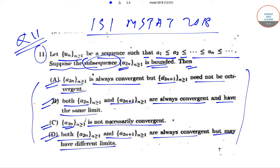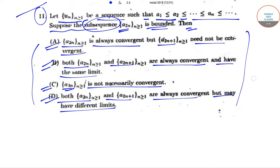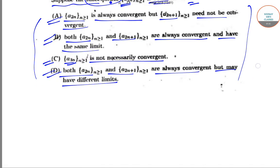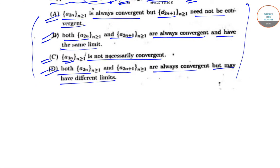So these are the four options. Now, we have been given that a_n is a sequence so that a1 ≤ a2 and so on, and the subsequence a_{2n} is bounded. We have to check for a_{2n} and a_{2n+1} whether they are both convergent and whether they have the same limit. We have been given that a1 ≤ a2 ≤ a3 and so on.